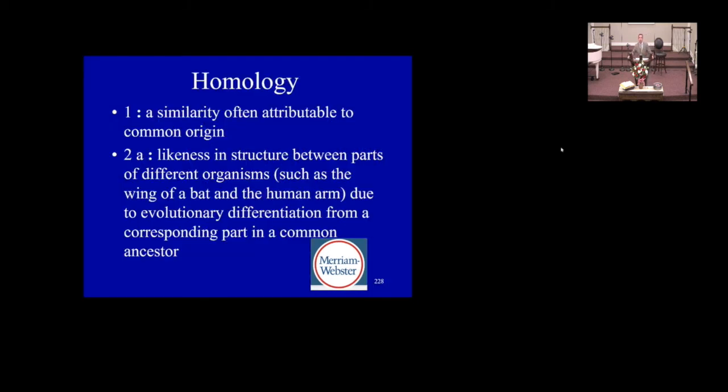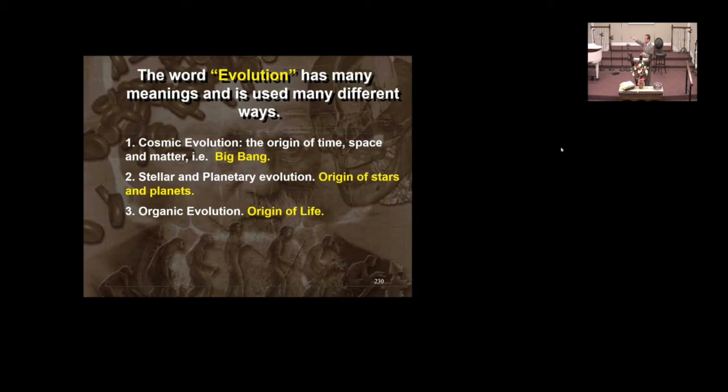Homology: a similarity often attributable to common origin. A likeness in structure between parts of different organisms, such as the wing of a bat and the human arm, due to evolutionary differentiation from a corresponding part in a common ancestor. Evolution: tonight we look at macroevolution. When you talk to people and they say they believe in evolution, this is normally the one they're talking about. This includes monkey to man, molecule to man.